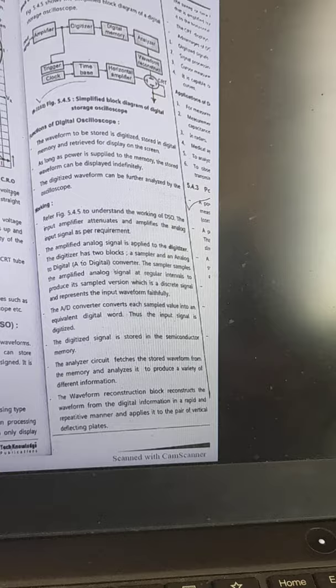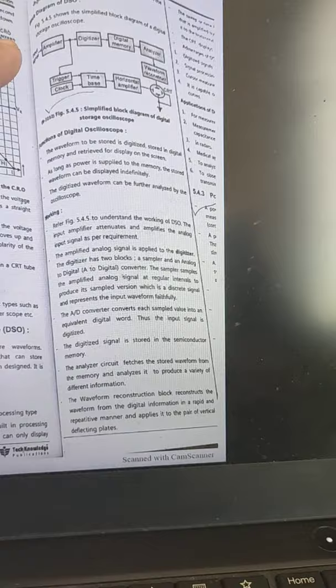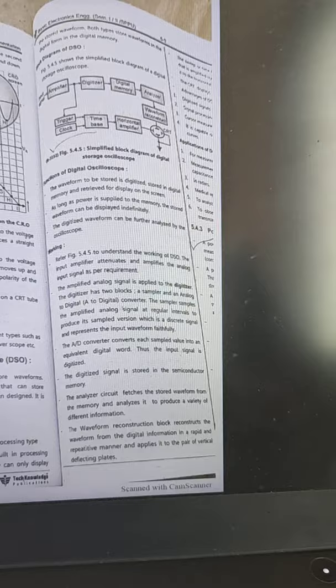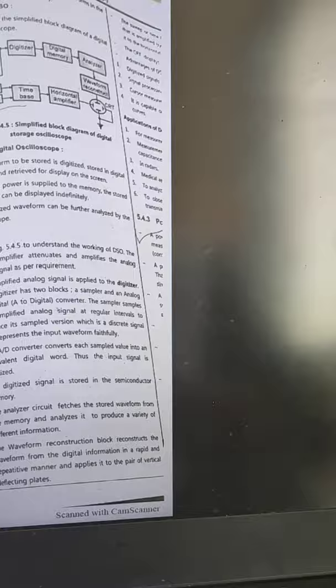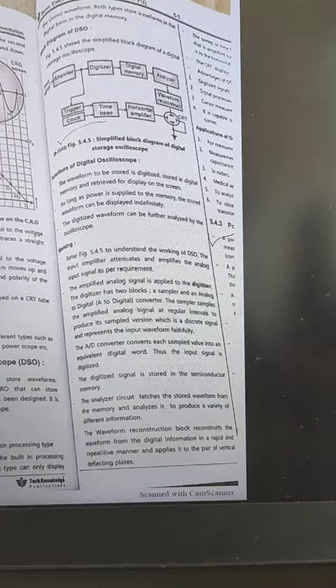This block diagram is very important. The input signal is applied to the amplifier. The amplifier attenuates and amplifies the analog signal as per our requirement. The amplified signal is then applied to the digitizer. The digitizer converts the analog signal into a digital signal.